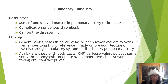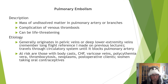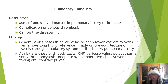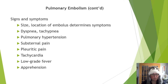Pulmonary embolism — PE — is a mass of undissolved matter in the pulmonary artery or its branches, arising from venous thrombosis. This is a very serious and potentially life-threatening condition. Generally the clot originates in pelvic veins or deep lower extremity veins — remember the long flight reference from the previous lecture. It travels through the circulatory system until it blocks the pulmonary artery. Patients with body casts, CHF, varicose veins, polycythemia vera, thrombocytosis, neoplasms, post-op status, and women taking oral contraceptives are at higher risk.